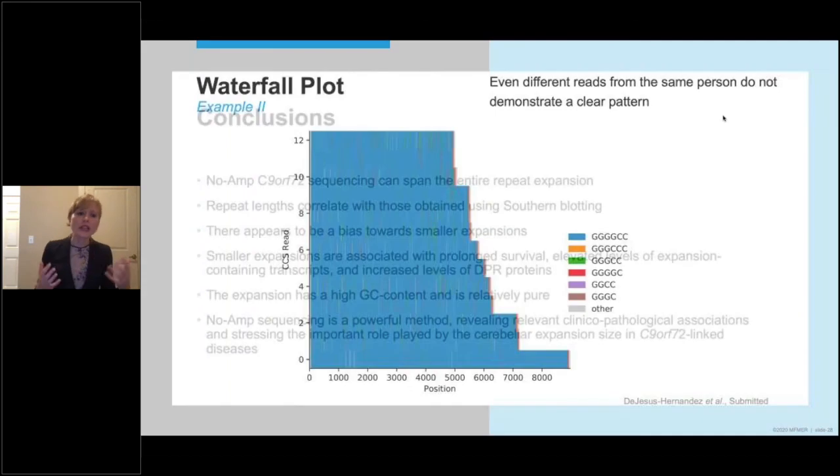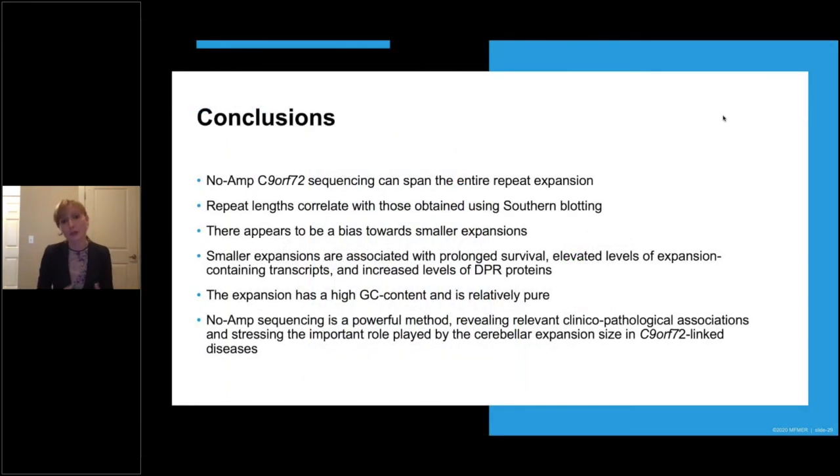So what can we conclude based on the information I've shared with you today? Well, no-amp sequencing can span the entire C9ORF72 repeat expansion. Hopefully, I've also convinced you that repeat lengths based on no-amp sequencing correlate with those obtained using southern blotting. However, one should realize that there is a bias towards smaller expansions when using no-amp sequencing.